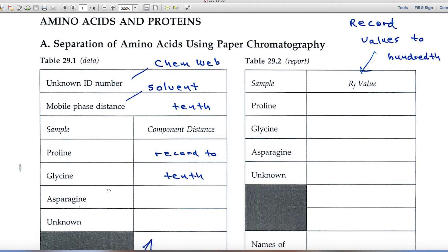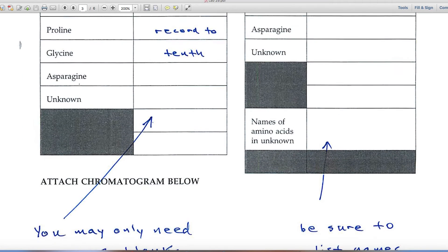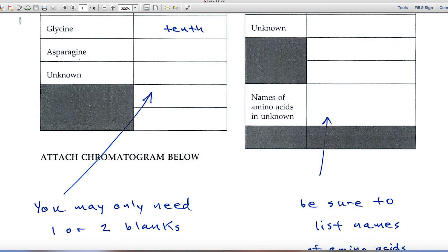And you'll also do that with these amino acids, recording them, recording the distance they've migrated to the tenth. And at the bottom of this table is where you'll record the distance that your unknown has migrated on the piece of paper. There are three blanks. You may not use all of those blanks. If your unknown has three components, then you'll have three spots and three different distances to record. But maybe your unknown only has one or two amino acids. So you may not use all of those blanks.